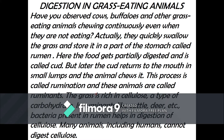The grass is rich in cellulose, which is a type of carbohydrate. In ruminants like cattle and deer, bacteria present in the rumen help in digestion of cellulose. Many animals, including humans, cannot digest cellulose.